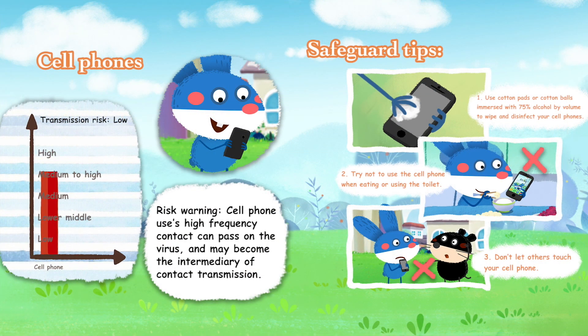Cell Phones — Risk Warning: Cell phones are used with high frequency and can pass on viruses, becoming an intermediary of contact transmission. Safeguard tips: (1) use cotton pads or cotton balls immersed with 75% alcohol by volume to wipe and disinfect your cell phone, (2) try not to use your cell phone when eating or using the toilet, and (3) don't let others touch your cell phone.